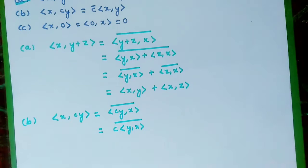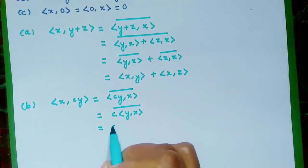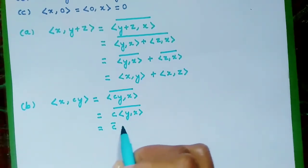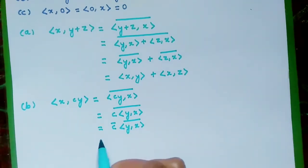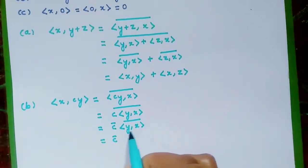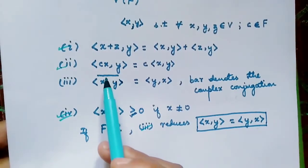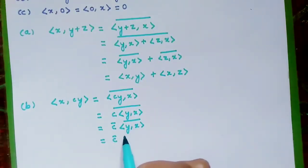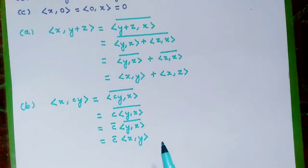The bar is applied to both the scalar and the vectors, so we get c̄ · ⟨y,x⟩ with the conjugate. Using the property that the complex conjugation of ⟨x,y⟩ equals ⟨y,x⟩, we obtain c̄⟨x,y⟩. The second statement is proved.